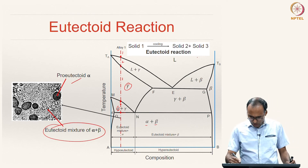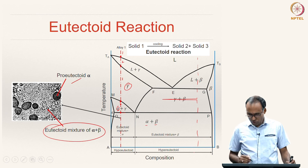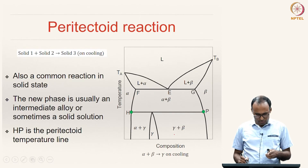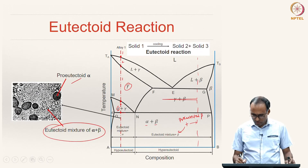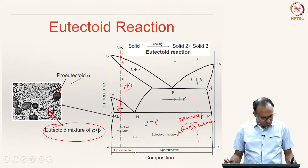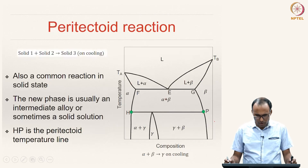Similarly, another alloy solidified on the beta-rich side will have pro-eutectoid beta plus a eutectoid mixture of alpha and beta.